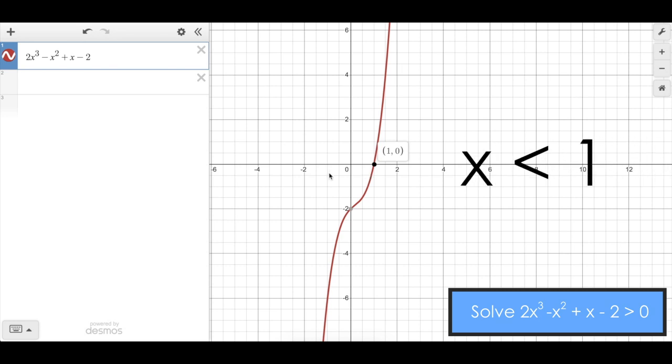You can see that anything on the left of the x-intercept of one is actually below the x-axis, so that would not be considered a solution to this inequality problem. So we can say the solution to this inequality problem is all x values that are greater than one.